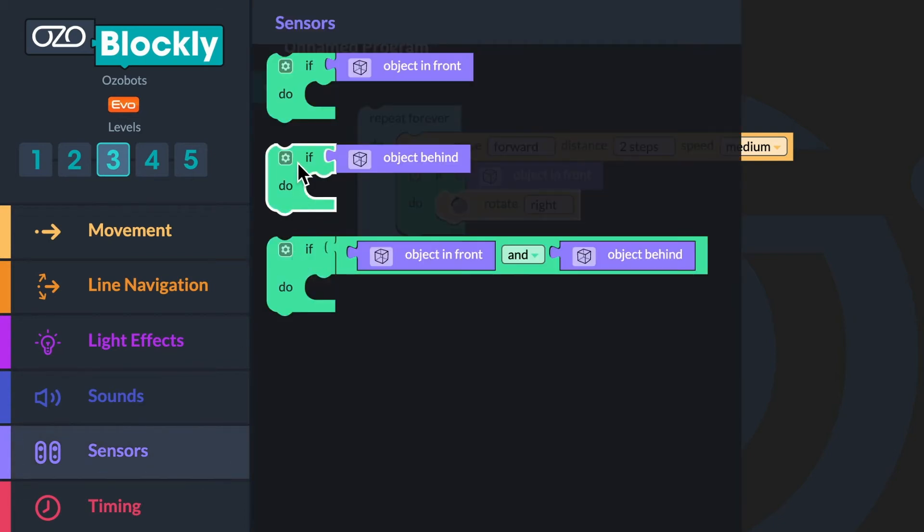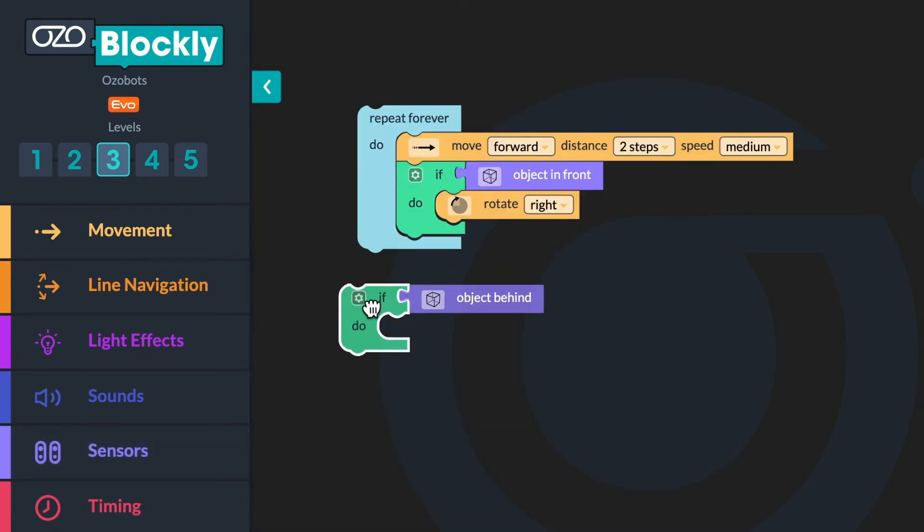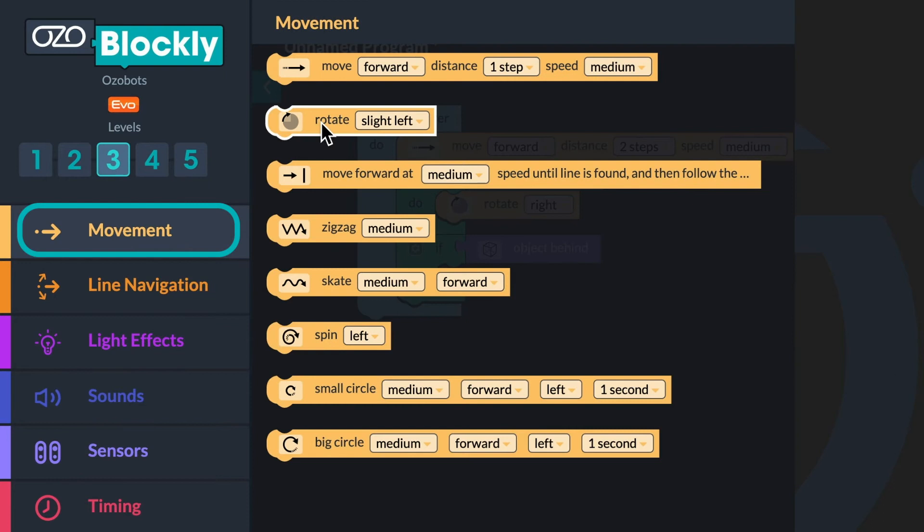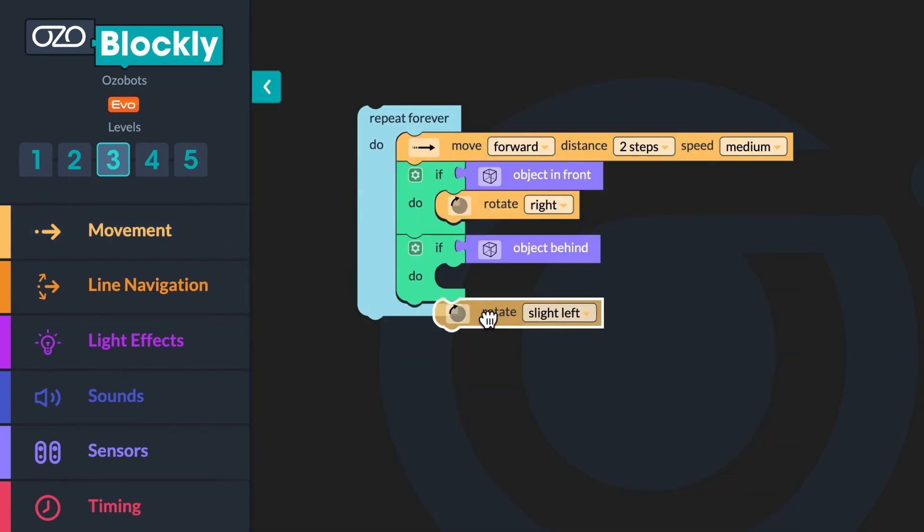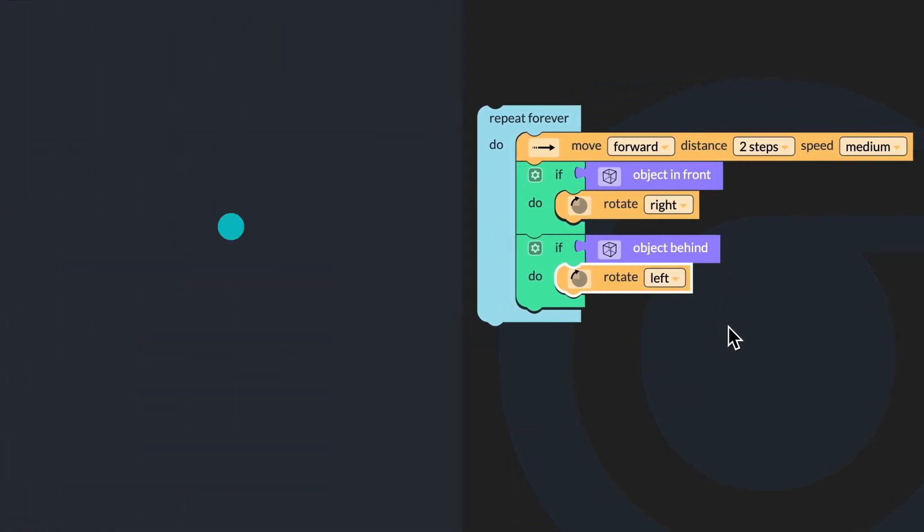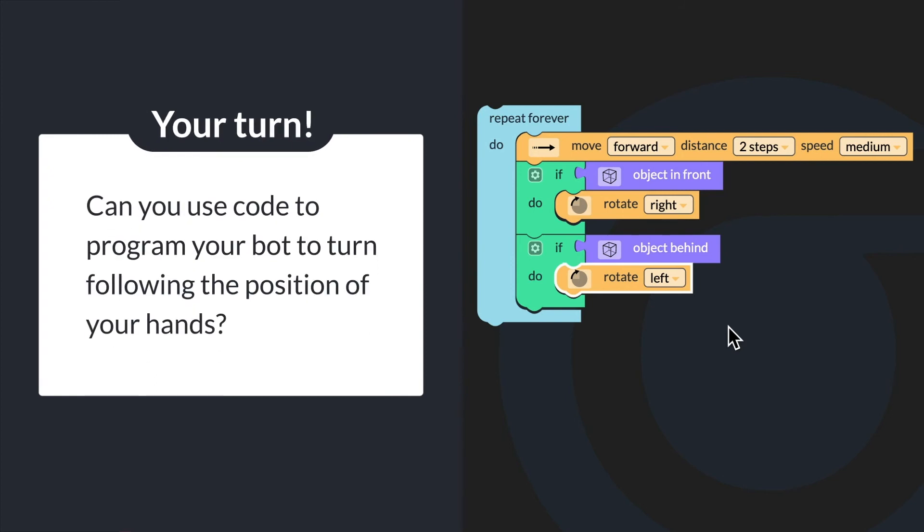Now go back to Sensors. Click an If object behind Do block and drag it inside the Loop block below the If object in front Do block. Then go to Movement. Click on a Rotate Slight Left block and drag it inside the Conditional block after the word Do. Finally, use the drop-down menu to change Slight Left to Left. Can you use code to program your bot to turn following the position of your hands?